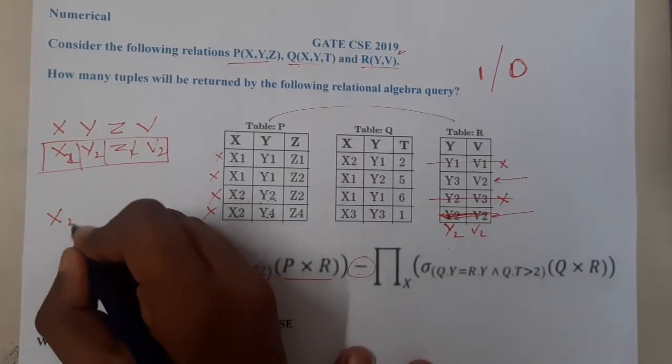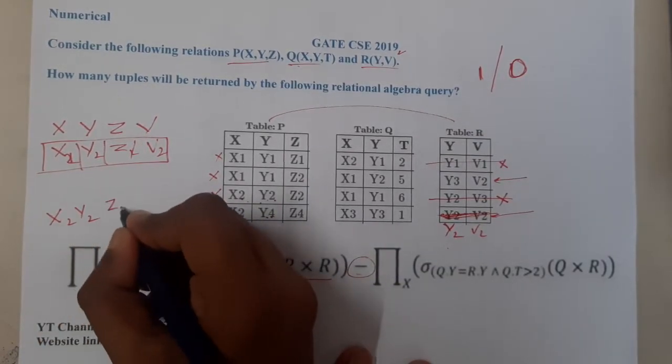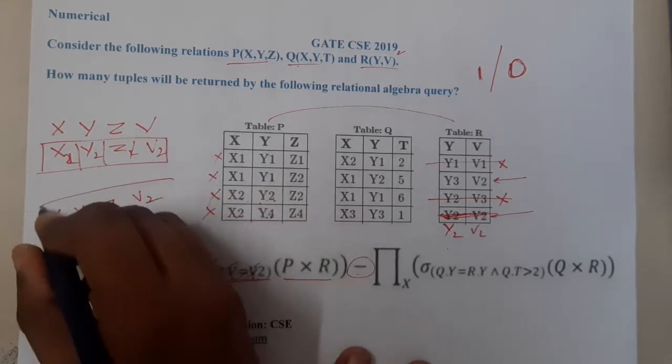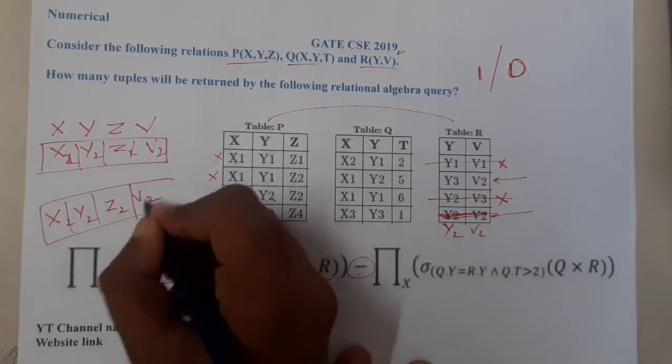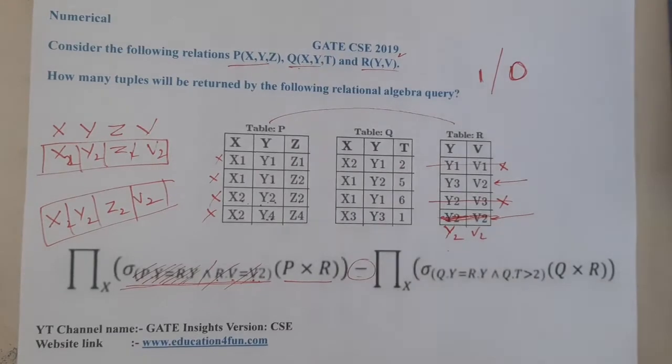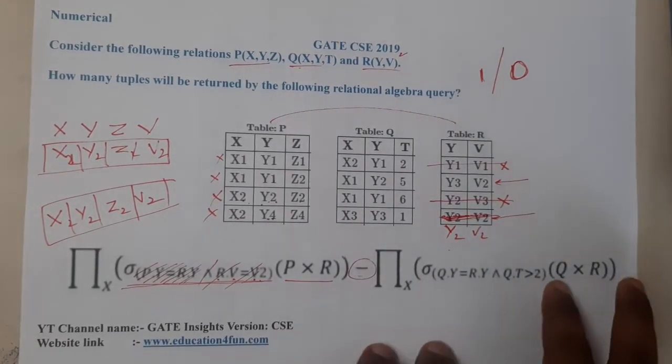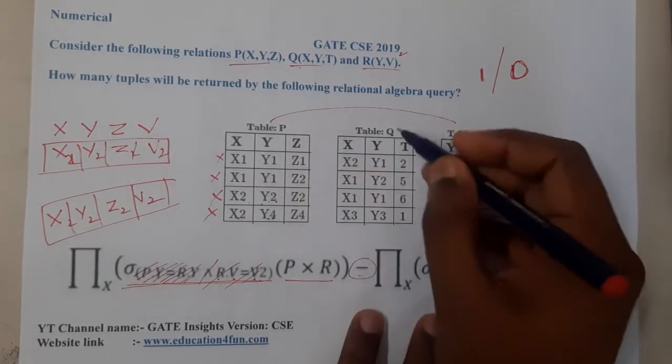So let me write it neatly. So it is X2, Y2, Z2, V2. Everything is 2 here. So now let us execute this particular thing.